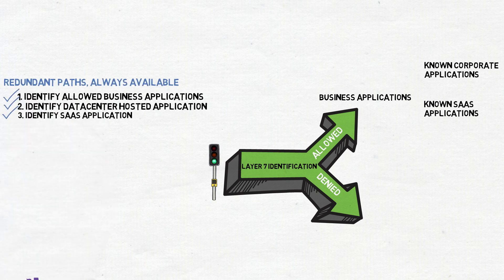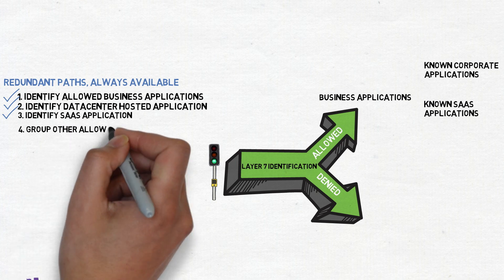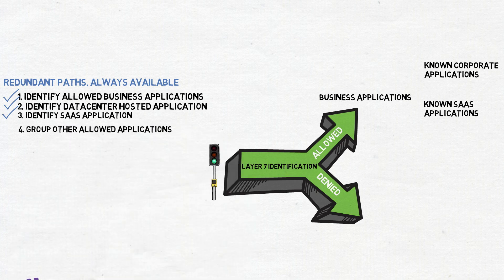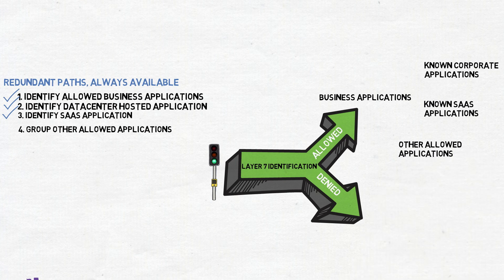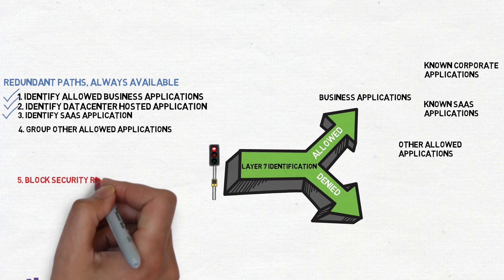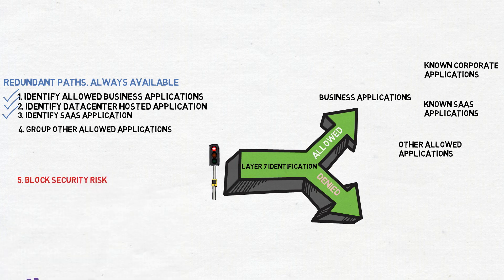The next group of applications can be a group called allowed application. These can be applications that pose little to no security risk and are allowed out to the internet to provide business functionality. Now, we want to group the applications that pose a security risk. And if you're choosing an SD-WAN product that does not have built-in security, this part may be non-existent, which is why you'll need to forward it off to a cloud security service for inspection. Again, not ideal.